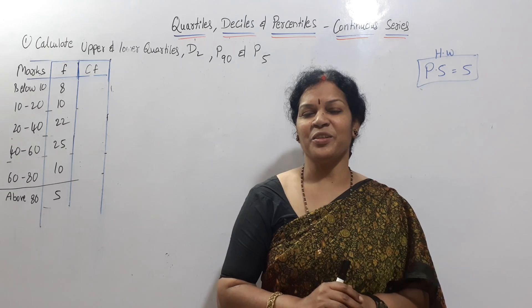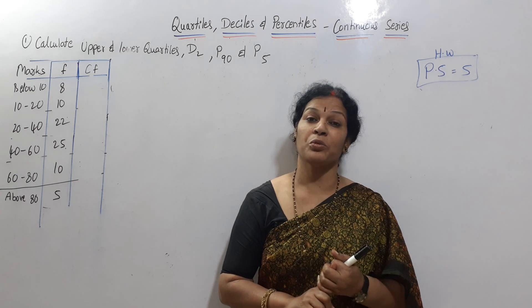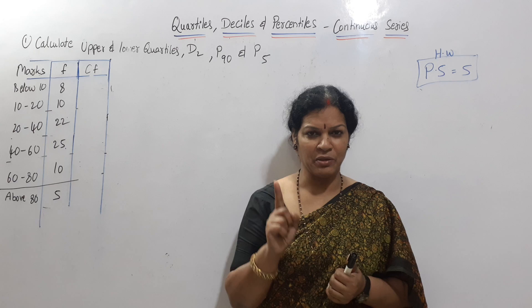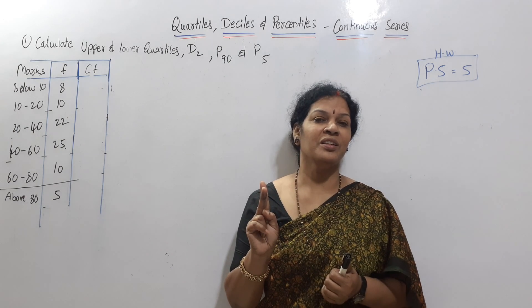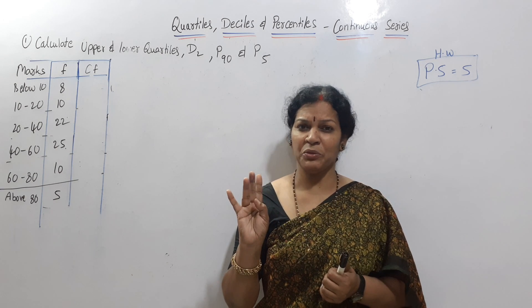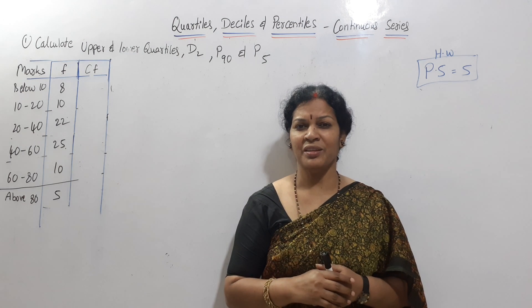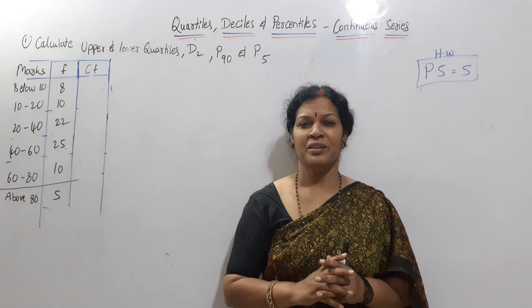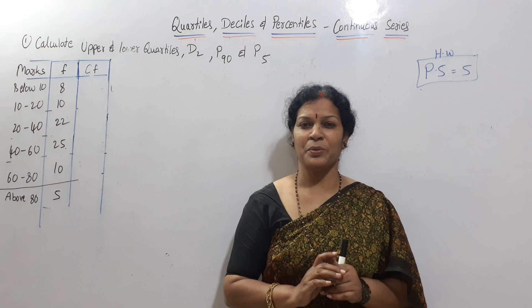So let's enter into this. We will start the continuous series. Step number 1: Cumulative Frequency. Step number 2: Find the size of the n by 2th item. Then we apply the median formula: M is equal to L plus n by 2 minus cf by f, into i. This same approach applies for Quartile 1, Quartile 3, Deciles, and Percentiles.